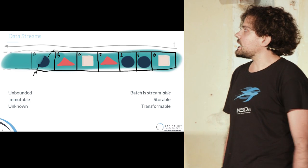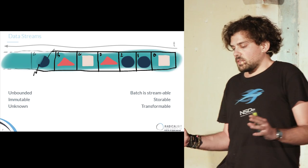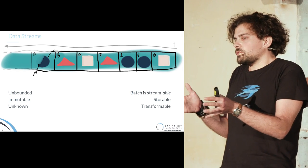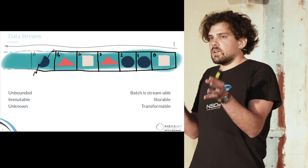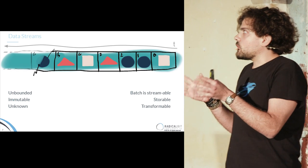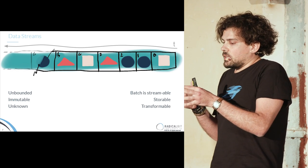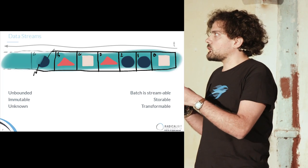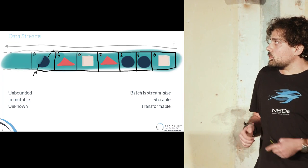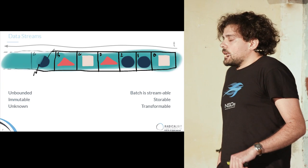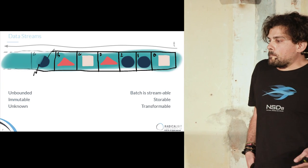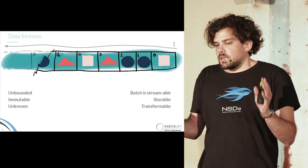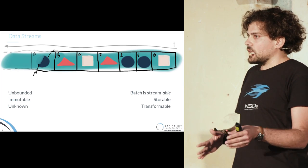A data stream is an abstraction over a special type of data where there is an external source that we don't have command over. It is unknown because we don't know where the stream is going to conclude itself, and it is also unbounded. A good thing about streams is that you can also model batches with them — you can take historical data and process it as events from the beginning to the end.